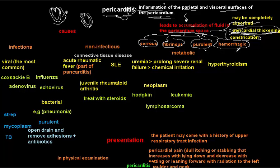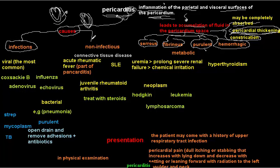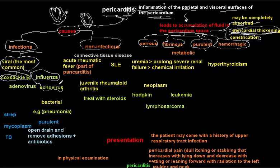Moving to the causes of pericarditis: like myocarditis, pericarditis has infectious and non-infectious causes. Viral infection is the most common cause of pericarditis. Viruses include Coxsackie B, influenza virus, echovirus, and adenovirus — all can cause viral pericarditis.